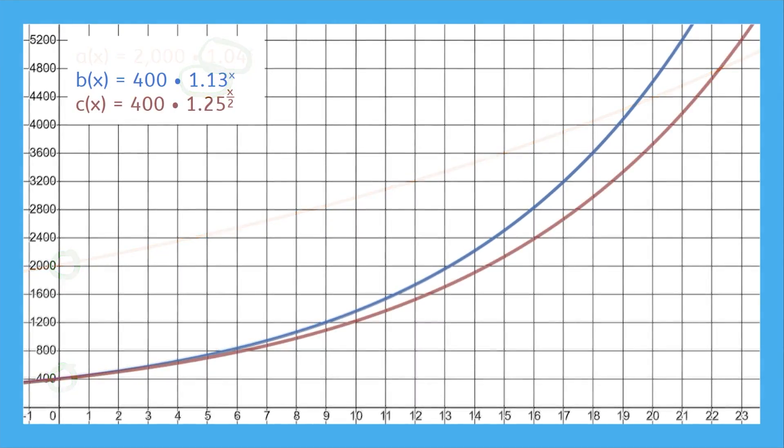If we compare functions B and C, C seems to have a higher growth factor, yet B comes out ahead. This is because C's growth factor occurs every two units. To get a better idea of how quickly it grows, we can rewrite the exponent's denominator as a root. This way, we can clearly see that B has a slightly higher growth factor, meaning it will end up higher than C.